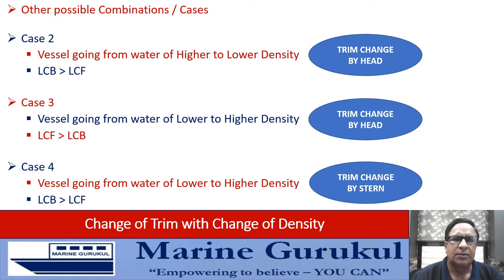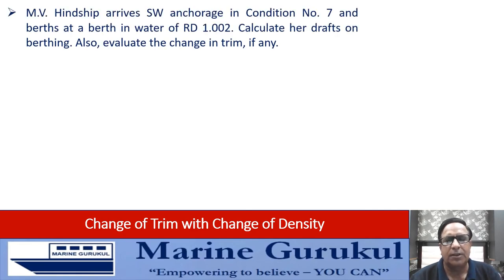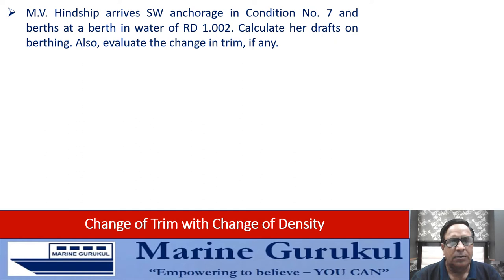We shall now see all this through examples and calculate the change in trim when a vessel goes from water of one density to another. Two scenarios: first, where we have access to the hydrostatic particulars of the ship; and second, where we do not have access but certain particulars are given and remain constant throughout the question. The first scenario is based on MV Hinship — she arrives at a salt water anchorage in condition number seven and berths in water of RD 1.002. Calculate her drafts on berthing assuming no change in displacement, and evaluate the change in trim.